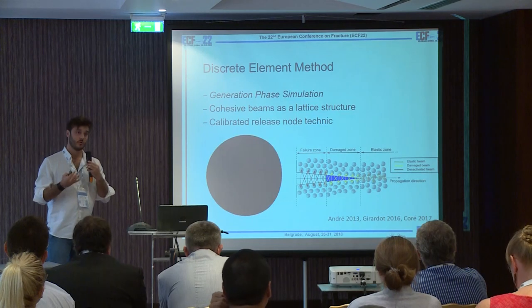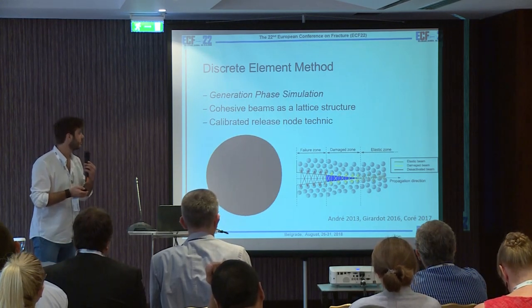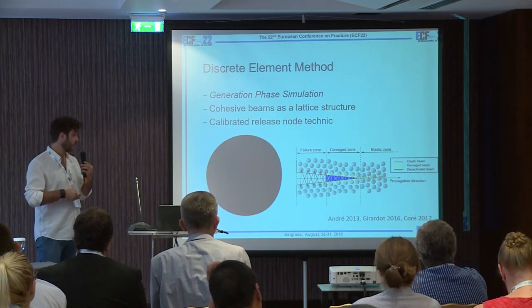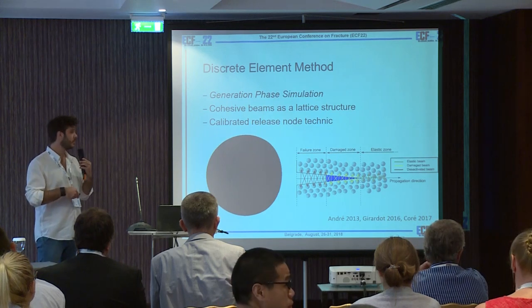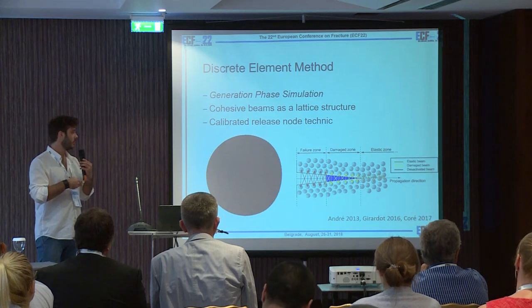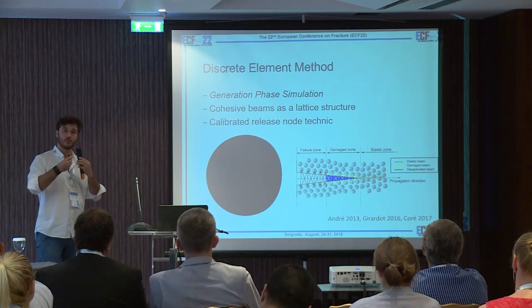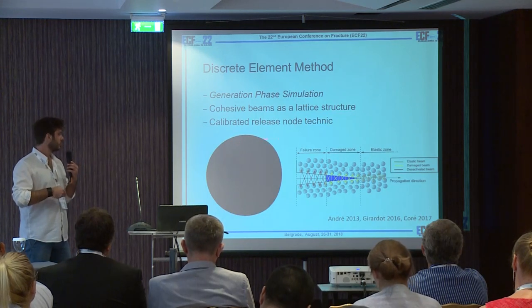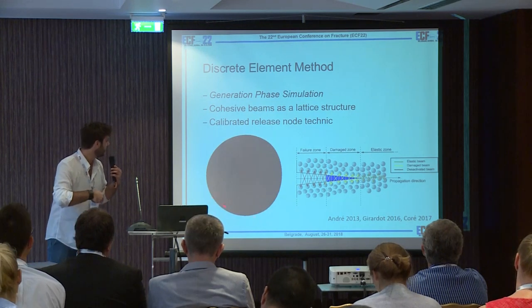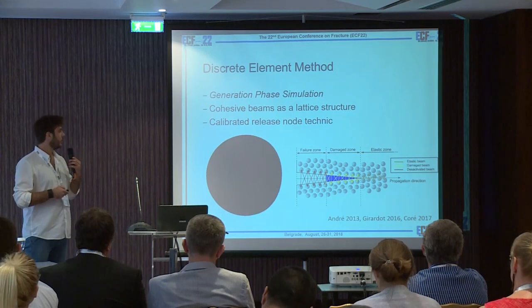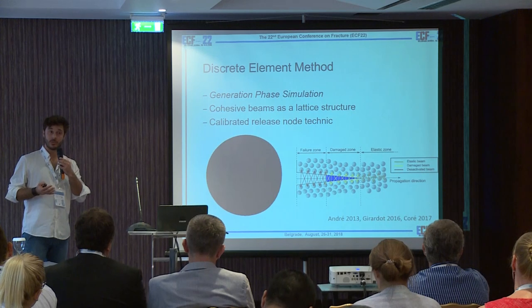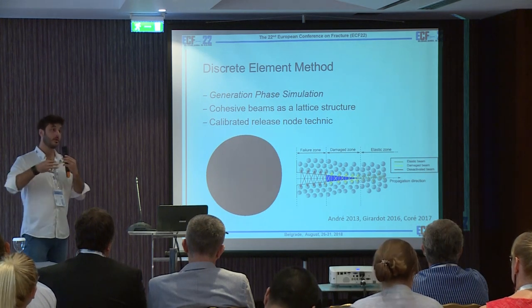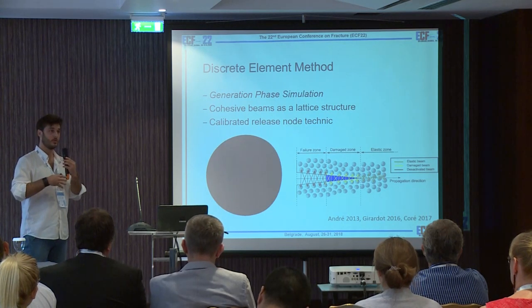To do that, we use a numerical simulation and a specific numerical method: the discrete element method. I won't enter the details of this method today, but probably you already know it. It is also called the lattice method, and uses cohesive bonds between elements. To propagate a crack is very easy because when a crack occurs, the bonds are deleted — numerically, it is very easy to propagate a crack. This is a whole sphere made with discrete elements. This test could also be done with the finite element method, but in our lab we use the discrete element method and wanted to see if dynamic crack propagation is well modeled with this method.